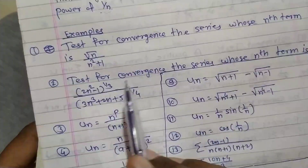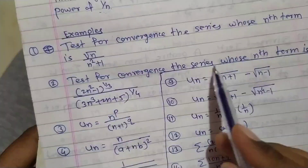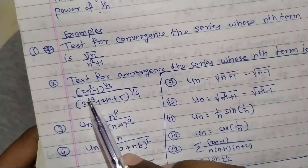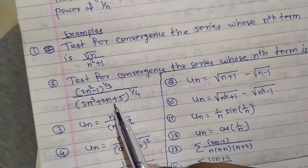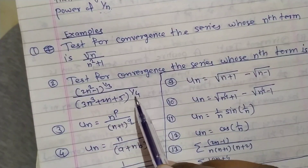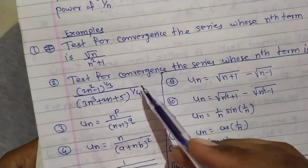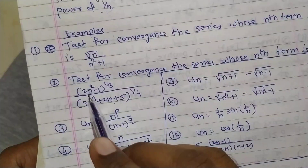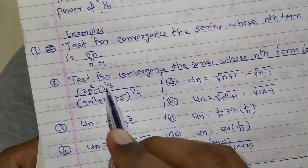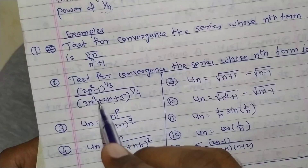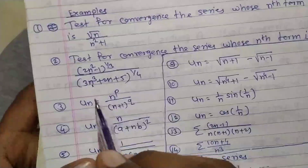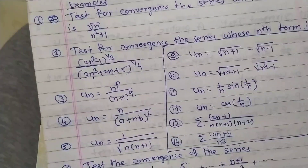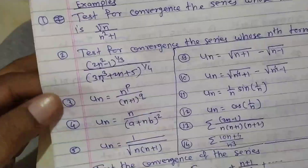The second problem is: test for convergence of the series whose nth term is (2n²-1)^(1/3) / (3n³+2n+5)^(1/4). Try this problem at home. For vn: take n² common from the numerator to get n^(2/3), and n³ common from the denominator to get n^(3/4). So vn = n^(2/3) / n^(3/4). Then find its limit.